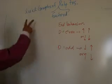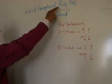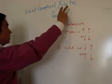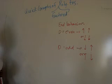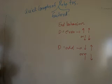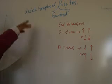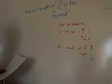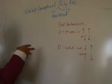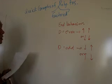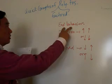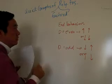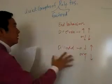We're going to be doing quick graphs of polynomial functions in factored form. This is a quick way to graph a polynomial function — it doesn't show exactly how high or low it goes, but for all intents and purposes, we're trying to see how the behavior of the polynomial function looks. The end behavior is what we're looking at first.